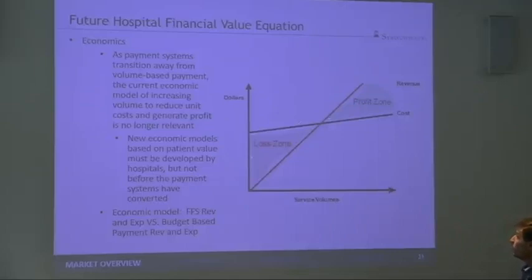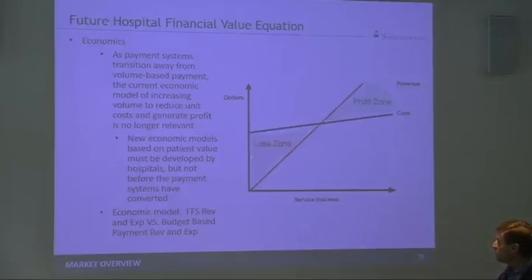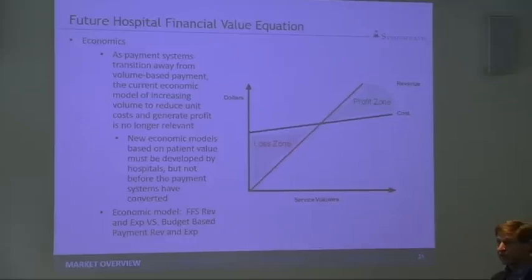Our revenue goes up, let's say, fifteen hundred dollars a day. So in this model, anytime your revenue line is much more steeply sloped than your expense line, if you push out enough volume and get paid better for what you do, you will break even. You will make money. Basic economics.